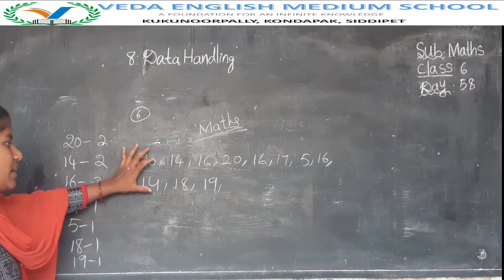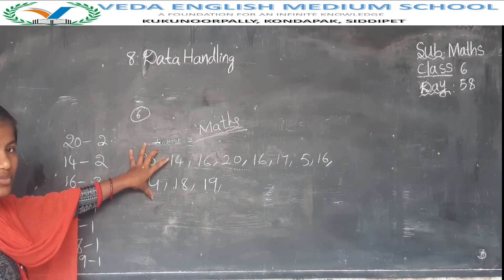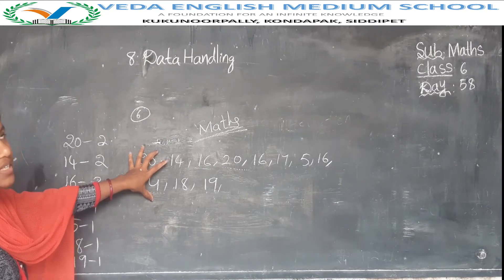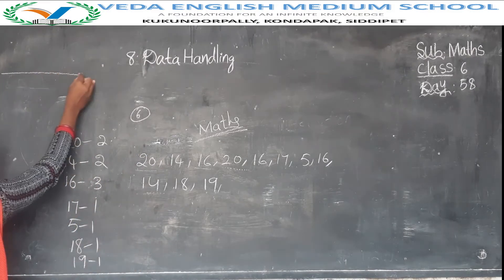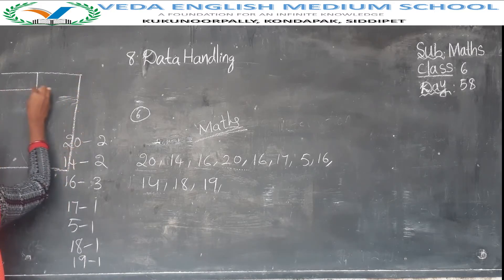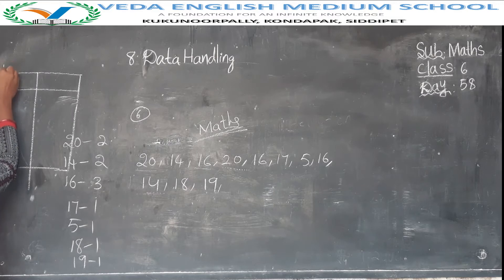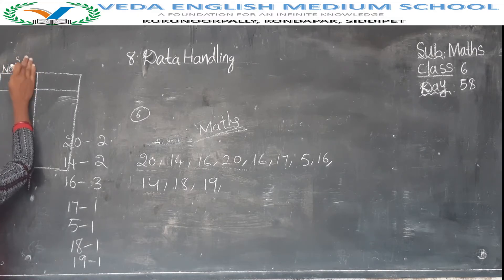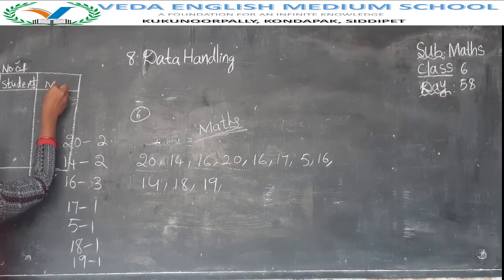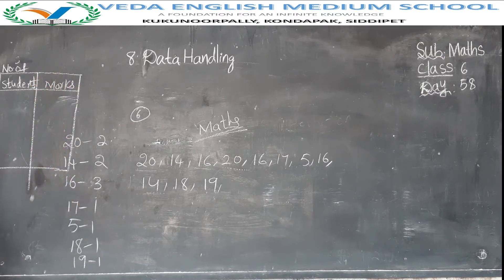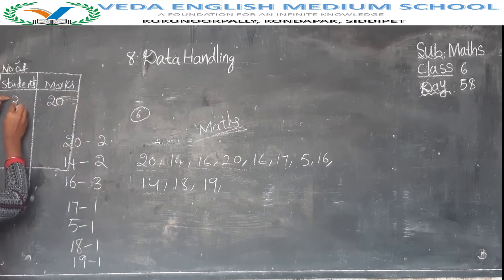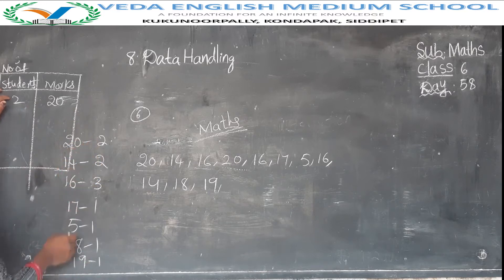Now see — I have written this data in the form of a group. If the data is written in the form of a group, it is somewhat difficult to find answers. But if I write the same data in the form of a box, it becomes easier.